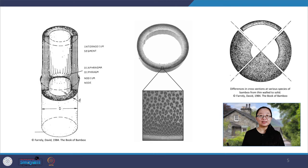Depending on the species, the thicker culms have moderate elasticity, while the thinner ones have more elasticity and considerable strength. The reason for this elasticity is a conical profile — bigger in the ground and smaller towards the top. This character can create a variety of forms, but due to changes in diameter and thickness of the bamboo stem along its length, and the stem not growing totally straight, precision in construction is difficult to obtain.